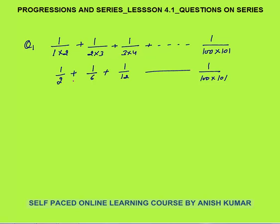In all such questions, we will convert each term of the form 1/(A×B) into K times (1/A − 1/B). We try to convert every term of the series into this format so that we can add or subtract them and then solve it.